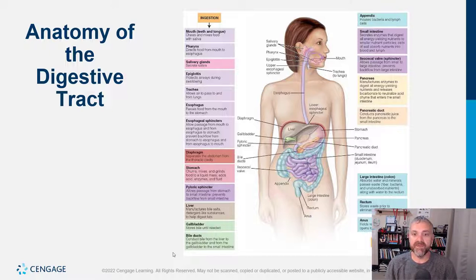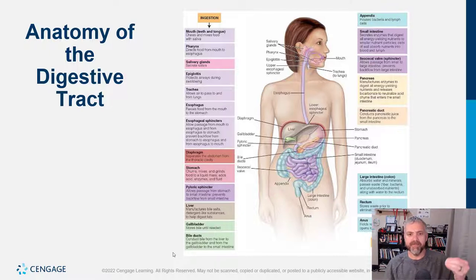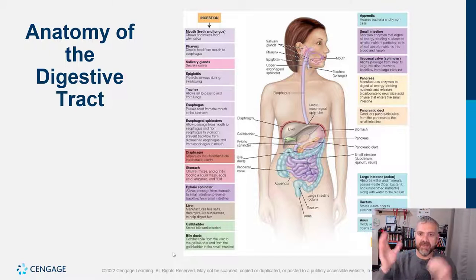The liver is where we make bile; the gallbladder is where it's stored and concentrated. Bile ducts will carry this bile into the small intestine, and the liver and gallbladder together dump into those bile ducts.